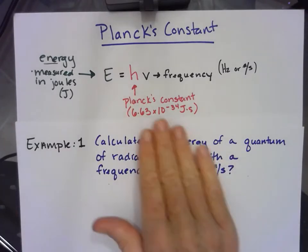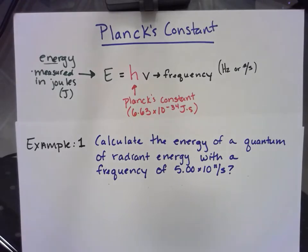The Planck's constant number 6.63 times 10 to the negative 34 joules times seconds you will need to memorize.